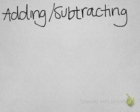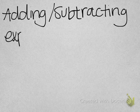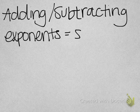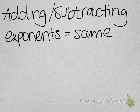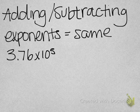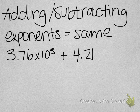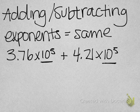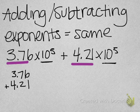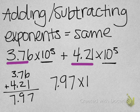You may also be asked to add or subtract numbers in scientific notation. The key is that your exponents must be the same. For example, 3.76 × 10⁵ plus 4.21 × 10⁵ — the exponents are both 10⁵, so just add the bases: 3.76 + 4.21 = 7.97 × 10⁵.